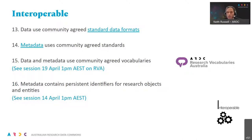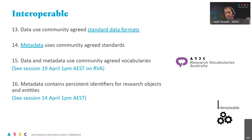Moving on to the I for Interoperable — this is probably one of the more complex elements in the FAIR principles, very much focused on making sure that data can be taken up and combined with other data available in the discipline. We recommend that the data use community-agreed standard data formats. This is very much dependent on what already exists in your discipline or community. If community standards already exist, please use them. If they don't yet exist, have a look with the community about establishing those, though we understand that will take some time. In the same way, please use community-agreed standards and approaches in the metadata for your discipline and area.